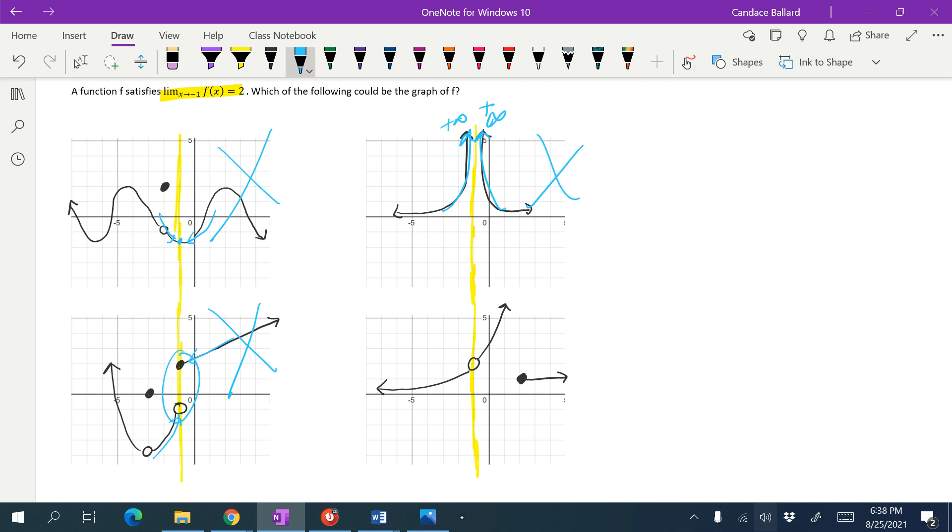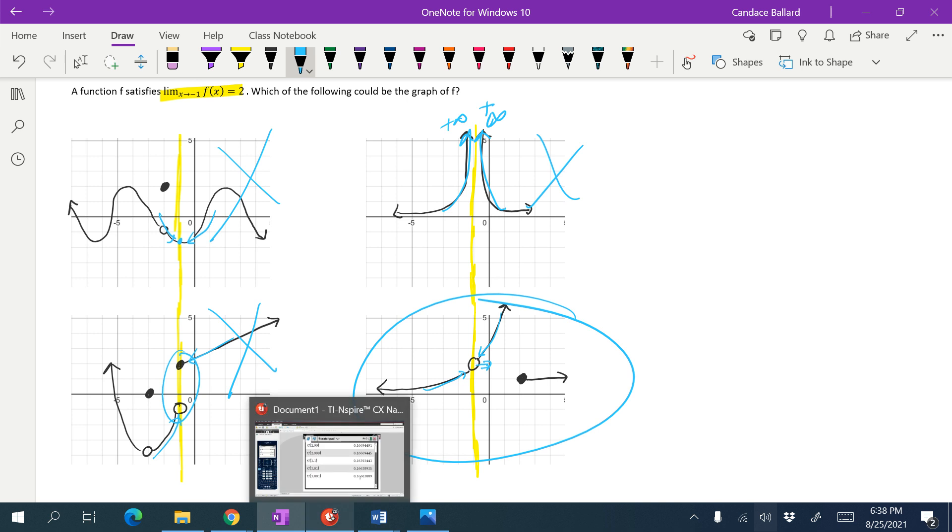Let's see if this last one works. From the left, this is looking good. It looks like I'm going to 2. From the right, looks like I'm going to 2. So this has to be the possible graph that satisfies that condition.